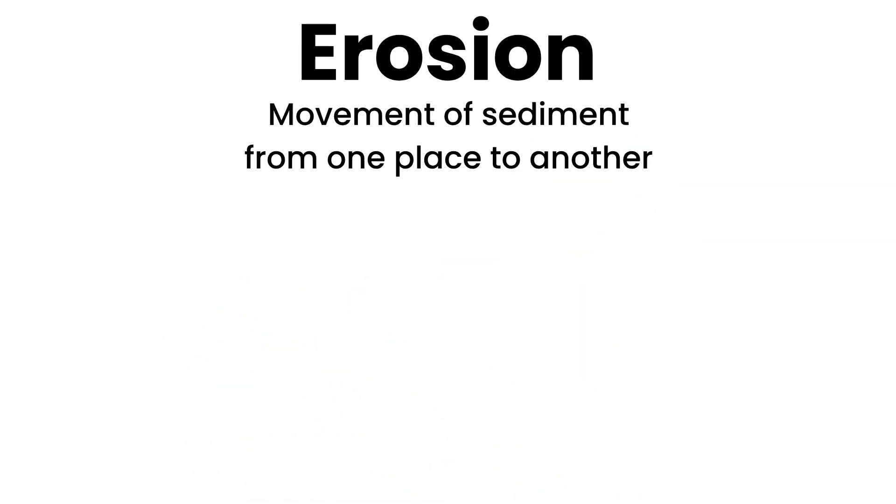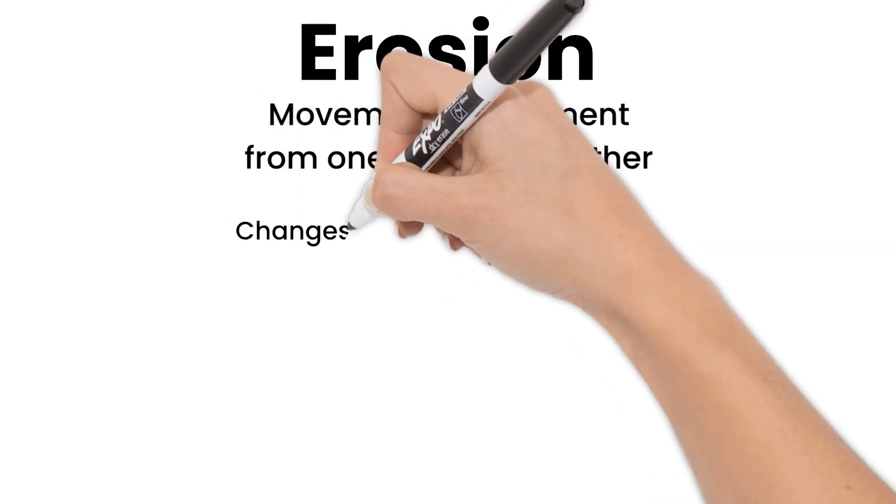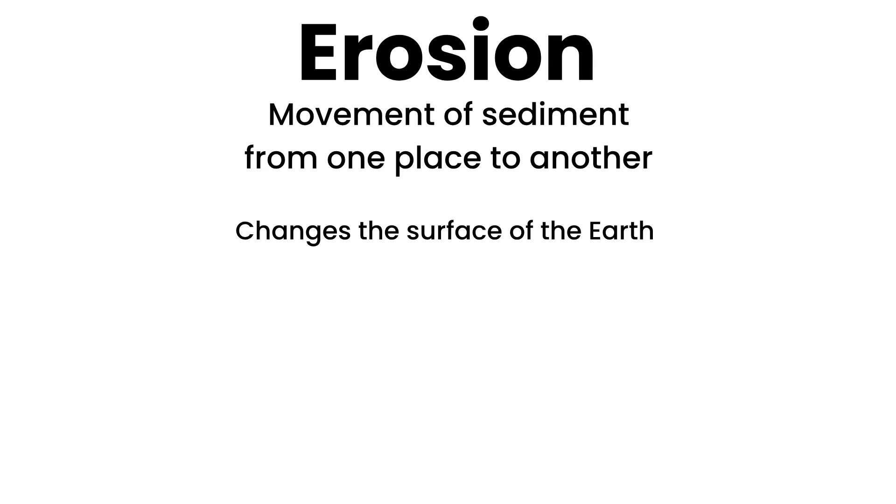Because erosion is moving sediment around, it can change what the Earth looks like. Erosion can change the surface of the Earth either suddenly or gradually. For example,